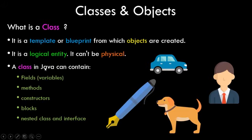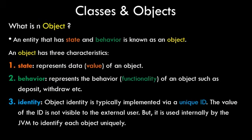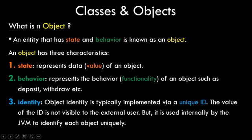Now let's see what an object is. An entity that has state and behavior is known as an object. An object has three characteristics: state, which represents the data value of an object — any data member inside the object is basically its state; behavior, which represents the functionality, essentially the methods the object has; and identity, which is a unique ID used internally by the JVM but not visible to external users. We mainly focus on state and behavior. Importantly, an object is derived out of a class.